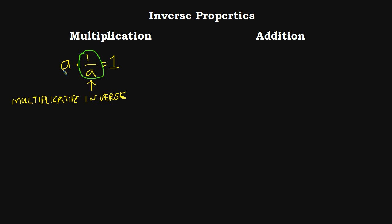If I have the number A, its multiplicative inverse is 1 over A. We use this when trying to get a variable by itself. Another name for multiplicative inverse — it starts with an R — is the reciprocal. For example, if we have (2/3)x = 7 and want to solve it, we multiply by the reciprocal of 2/3, which is 3/2. Notice that (3/2) times (2/3) equals 1. That's why we care about the multiplicative inverse.